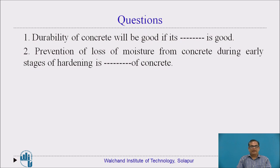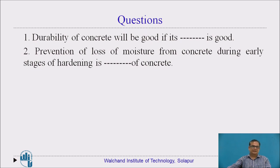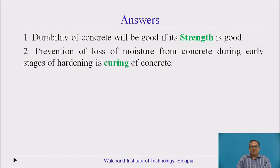Here are two questions for you. Number one: durability of concrete will be good if its blank is good — you have to fill this space. Number two: prevention of loss of moisture from concrete during early stages of hardening is dash of concrete. The correct answers are: durability of concrete will be good if its strength is good, and number two, prevention of loss of moisture from concrete during early stages of hardening is curing of concrete.